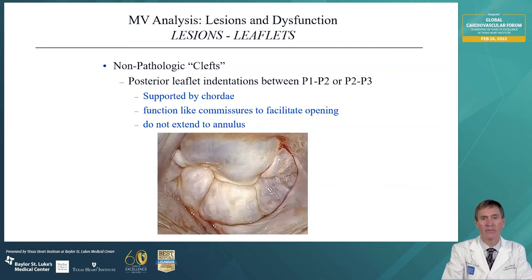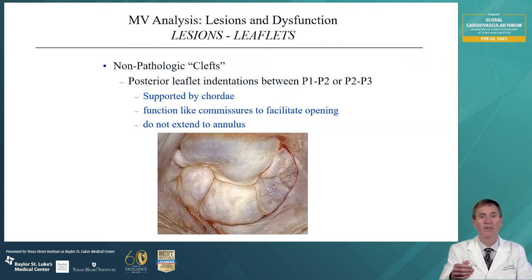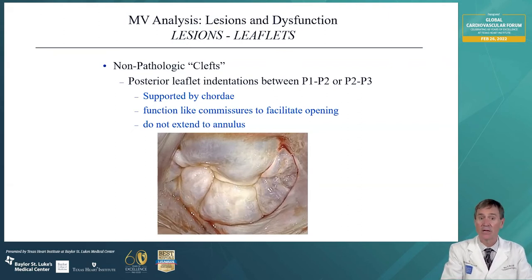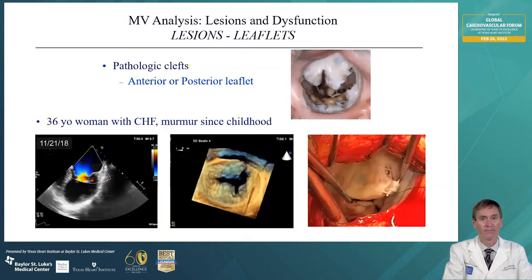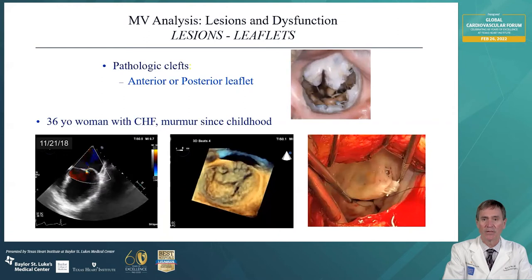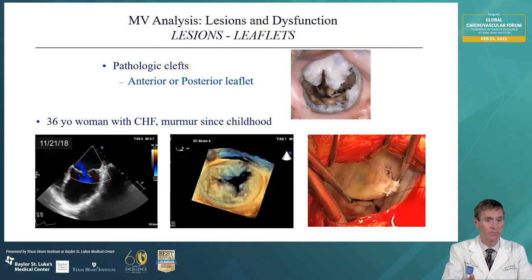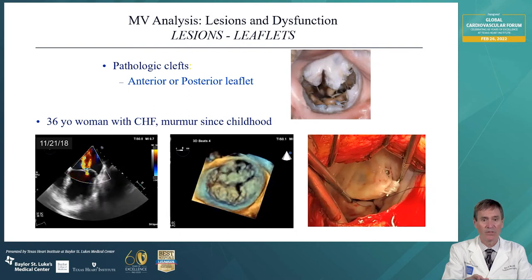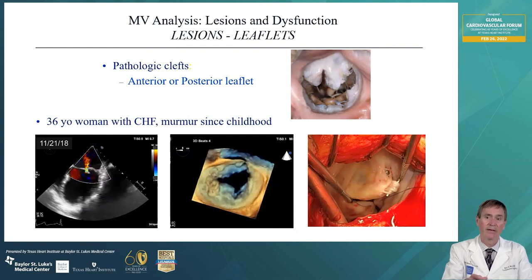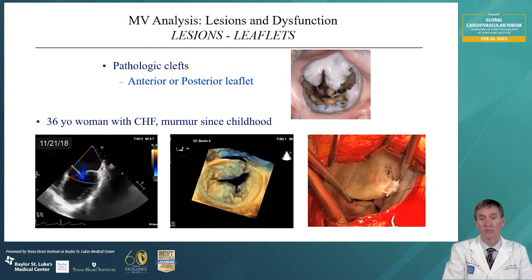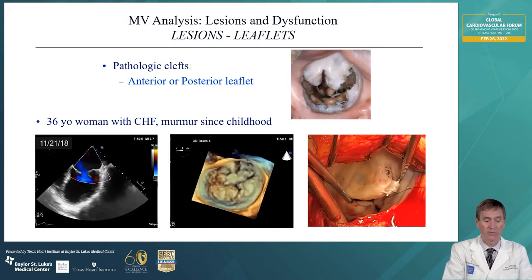Let's first talk about non-pathologic clefts. There are natural clefts between P1 and P2, and between P2 and P3. These are supported by cords and function like commissures to facilitate a wide opening of the valve. They don't extend to the annulus — they're only partially into the leaflet. Then we have pathologic clefts. Here we can see an anterior cleft that is generally congenital, and also a pathologic cleft in the posterior leaflet between P2 and P3 creating severe regurgitation. The image demonstrates us putting a suture in to start to repair and close that cleft.